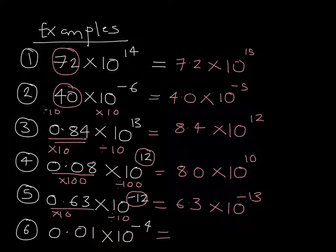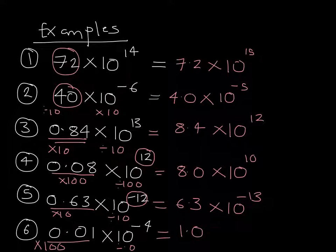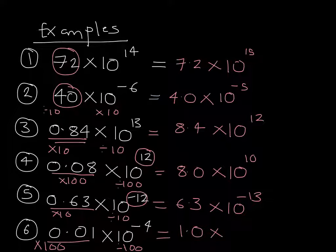Last question: we have 0.01, which has to become 1.0. So we've multiplied by 100, which means we have to divide by 100 here — making 10 to the negative 4 ten times smaller and then ten times smaller again. Remember, as a number becomes smaller, the powers become more negative, which means this will be 1.0 times 10 to the power of minus 6.